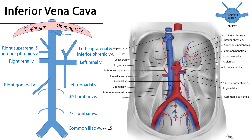is a vessel that mirrors its counterpart, the abdominal aorta, in the abdominal cavity. It can be found right lateral to the abdominal aorta, and both of these vessels are retroperitoneal.